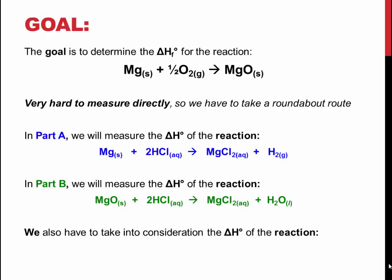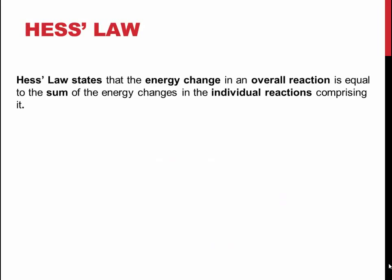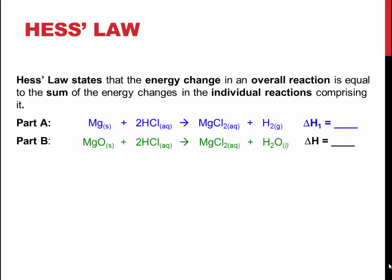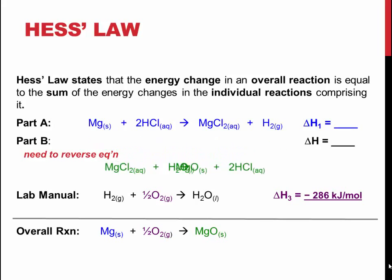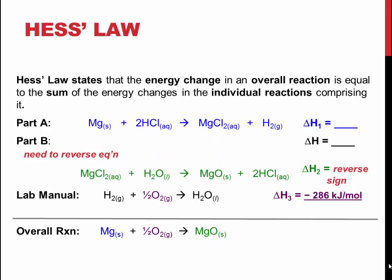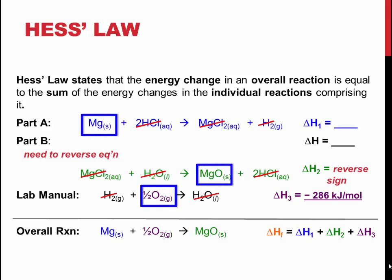Combining the three reactions shown on the slide will give us the overall reaction we want to look at. By reversing a reaction that is performed in Part B and adding in the formation of water from hydrogen and oxygen gas that is in the lab manual, we get the overall reaction we are looking for. According to Hess's law, the separate reaction enthalpy changes can be summed to get the enthalpy of the overall reaction. Note that because the Part B reaction is being reversed, the sign of the enthalpy change is also reversed.